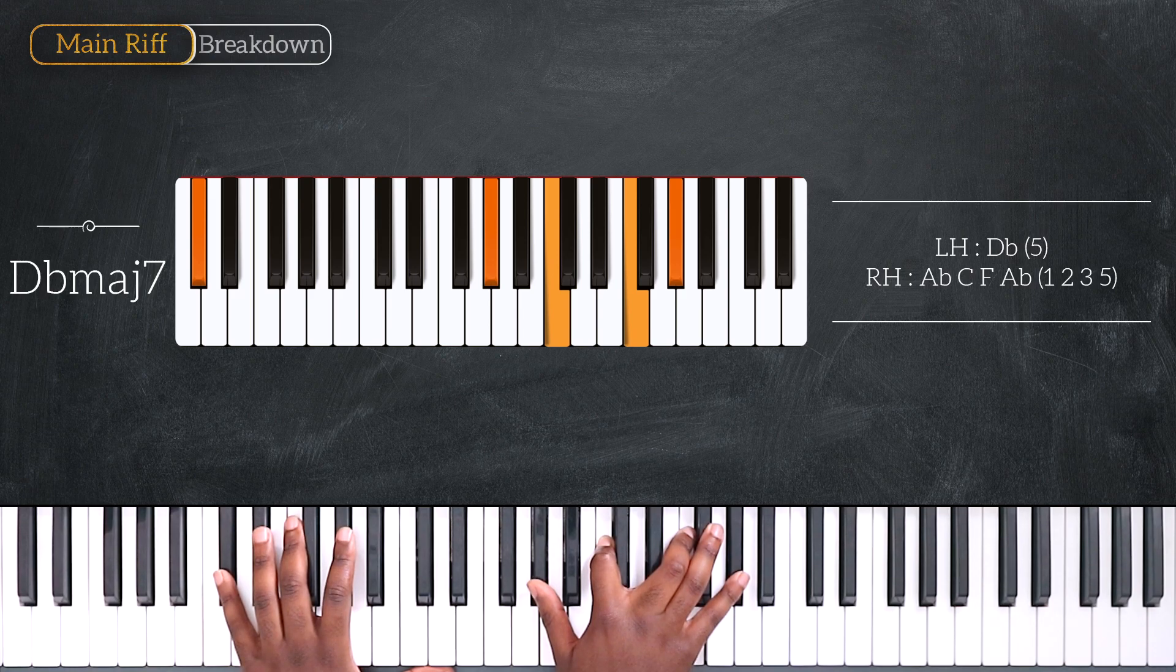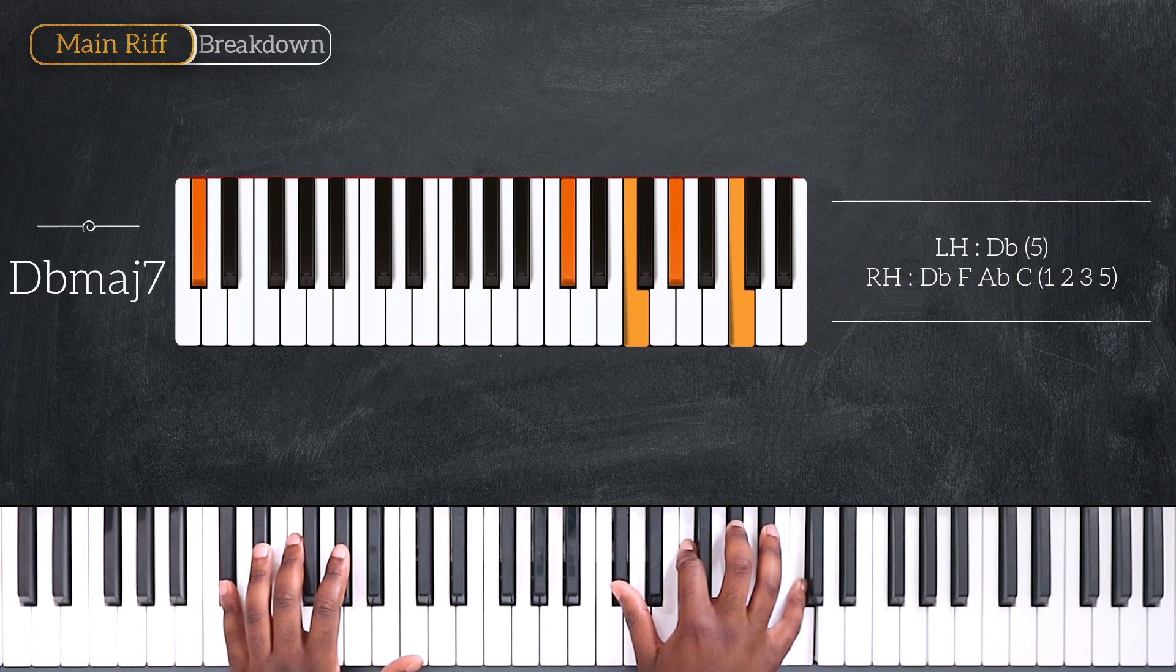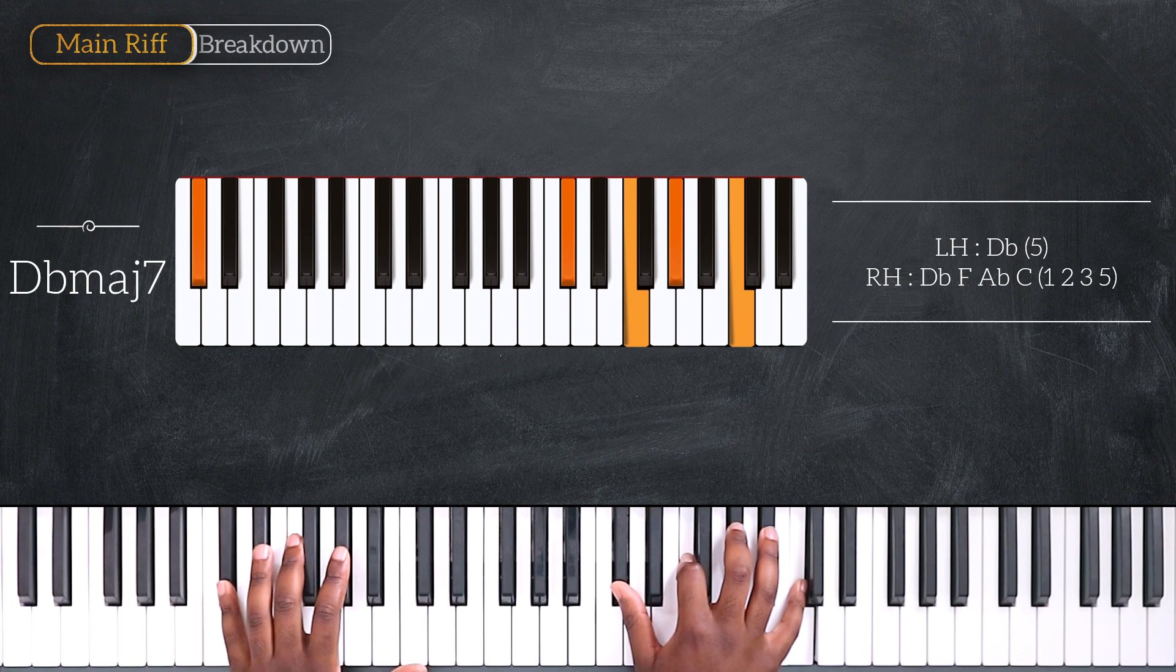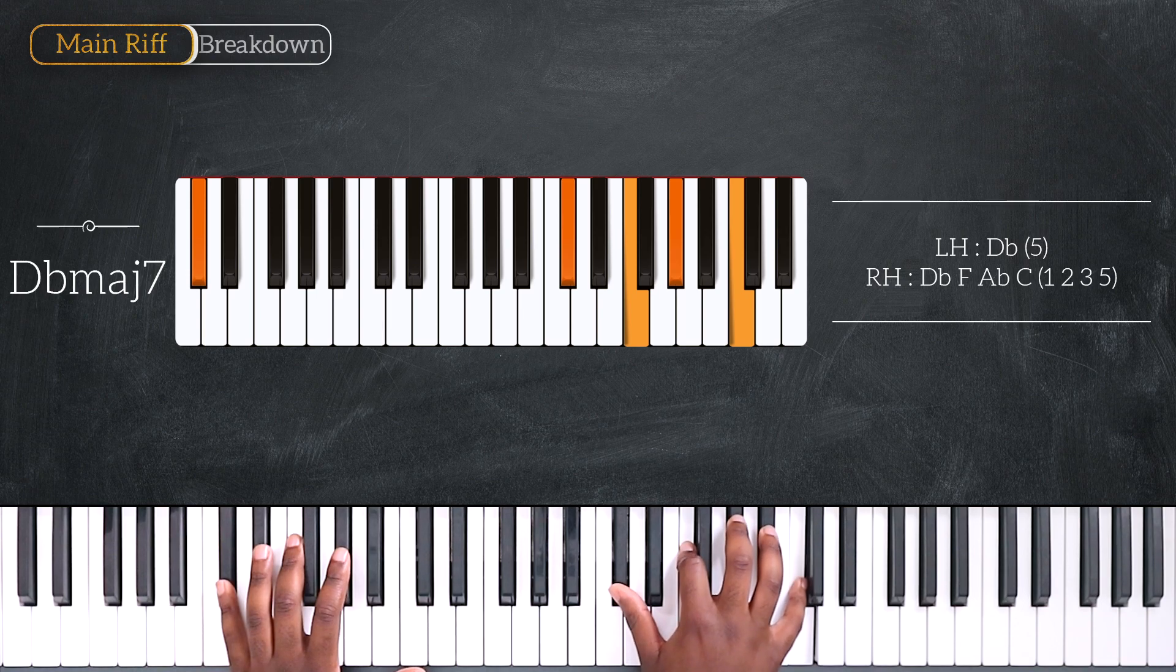And then after that we have Db major 7 but using a different voicing. So now for the right hand I have Db, F, Ab and C.